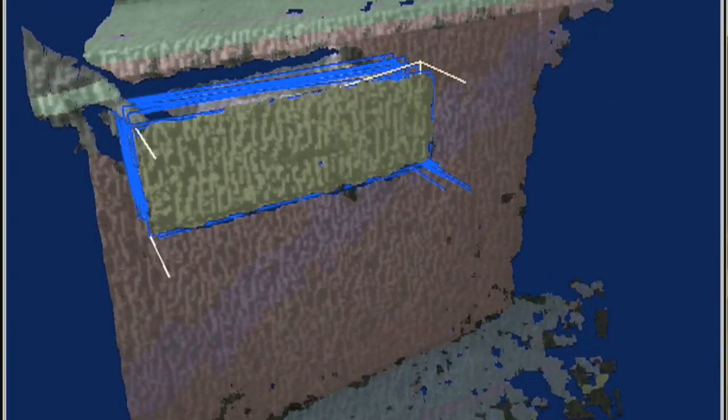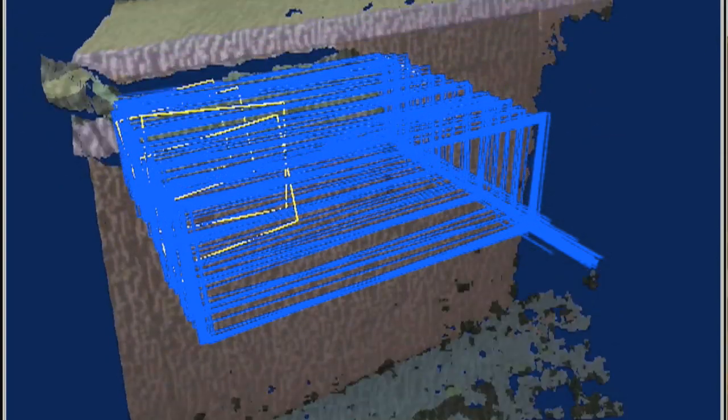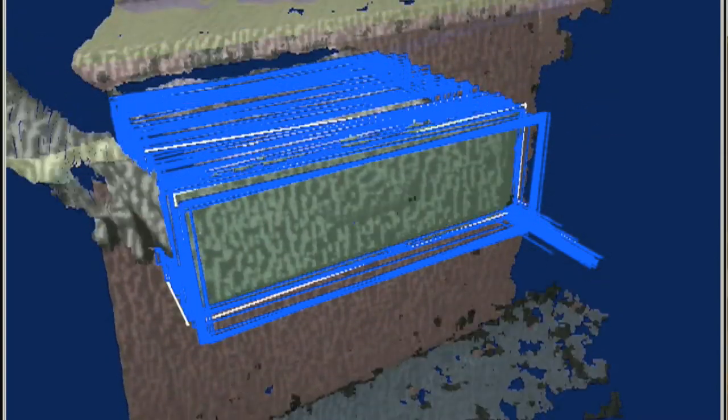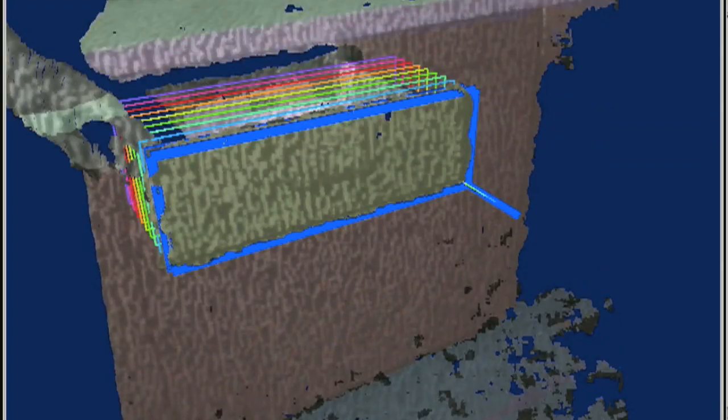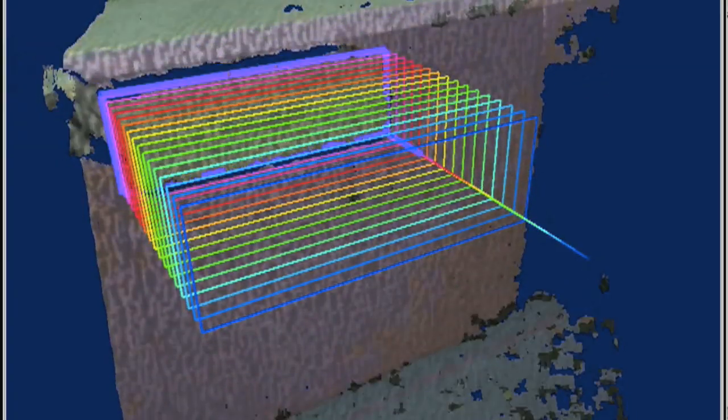The tracker outputs a sequence of rectangle observations that belong together that come from the same object and now we can start an articulation model learner that will discover from which type of object this track actually came from. So in this case here in the video, the articulation model learner has discovered that it was a drawer that was moved out of a cabinet.